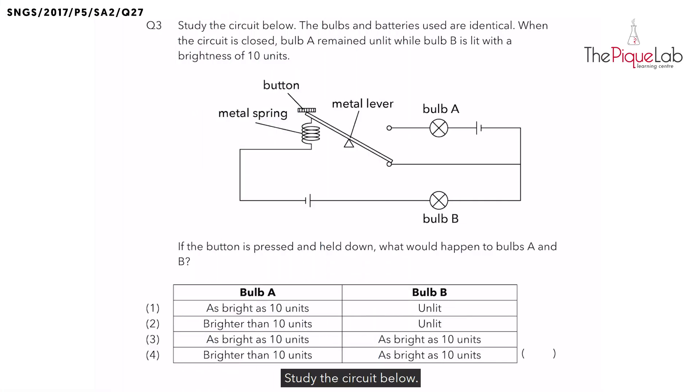Study the circuit below. The bulbs and batteries used are identical. When the circuit is closed, bulb A remains unlit while bulb B is lit with a brightness of 10 units.